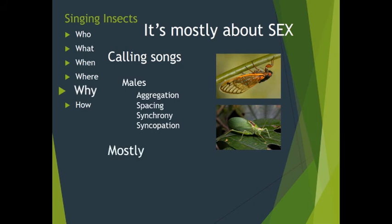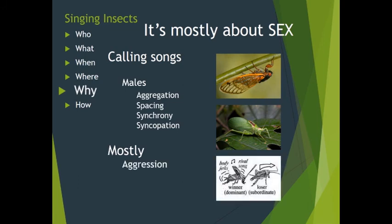Insect sounds are mostly about sex, but not completely. Males also challenge each other with ticks, chirps, and snaps, most common among ground-dwelling species such as crickets. A few species emit distress calls — for example, true katydids may squawk when handled, and cicadas emit loud rattling alarm calls when disturbed. A few males have even learned to use these alarm calls to scare other males off, reducing competition for nearby females.